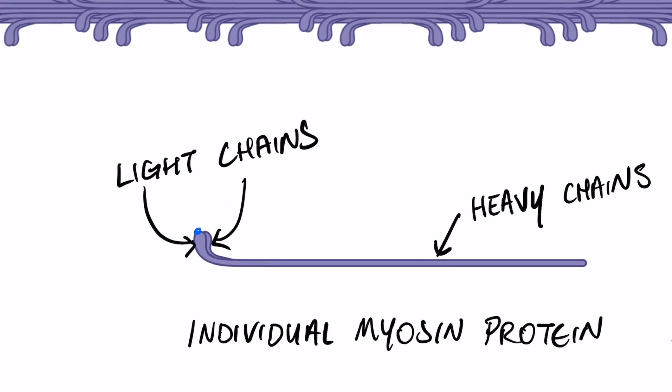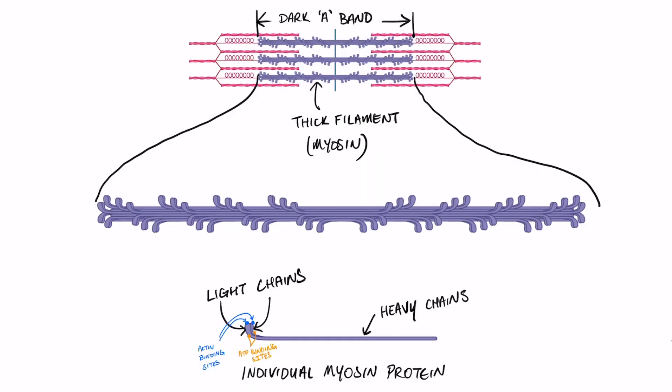Now, if we zoom in a little bit more, there are a couple of important sites on these light chains or the heads. Here in blue we have the actin binding site—that is the exact spot on the myosin protein that the actin will bind onto. In orange we have the ATP binding site. These are two important binding sites that will determine the conformation of the light chains or the heads of the myosin subunit.